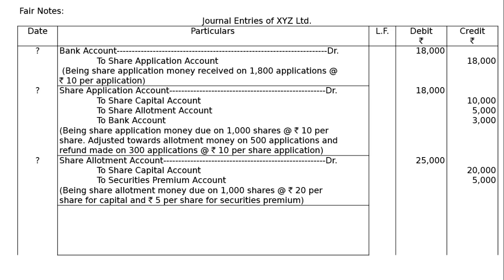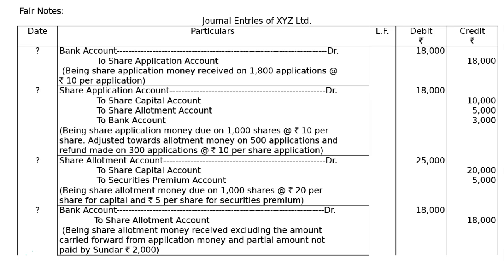Entry 3: Share allotment account debited Rs.25,000 (1,000 × 25) — to share capital account Rs.20,000 (1,000 × 20), to securities premium reserve account Rs.5,000. Being share allotment money due on 1,000 shares at Rs.20 per share for capital and Rs.5 per share for securities premium reserve: debit Rs.25,000, credit Rs.20,000 and Rs.5,000. Entry 4 (allotment receipt): Bank account debited to share allotment account — being share allotment money received, excluding amount carried forward from application money and partial amount not paid by Sundar (Rs.2,000): 25,000 − 5,000 − 2,000 = Rs.18,000.